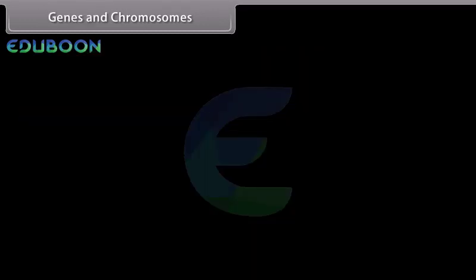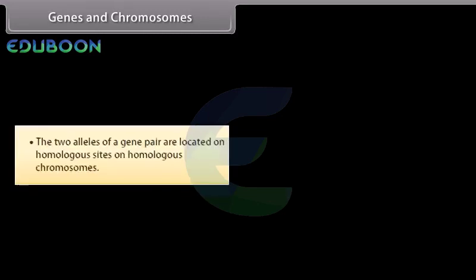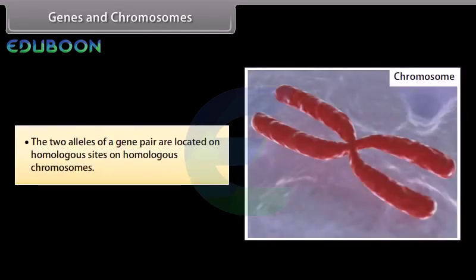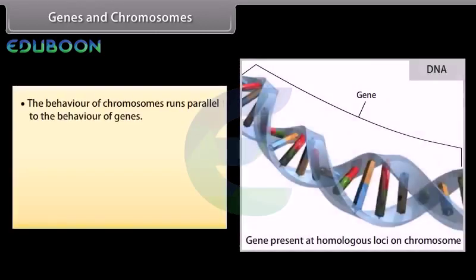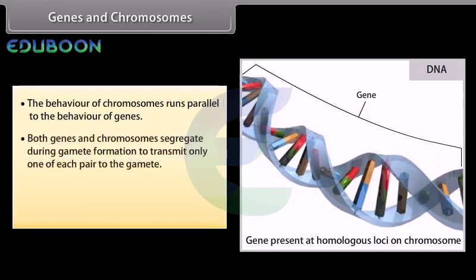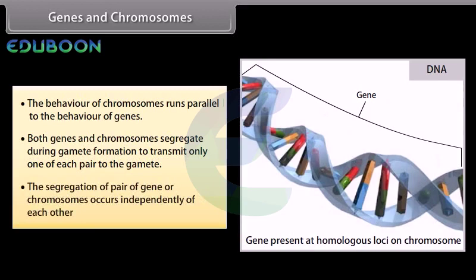The two alleles of a gene pair are located on homologous sites on homologous chromosomes. The behavior of chromosomes runs parallel to the behavior of genes. Both genes and chromosomes segregate during gamete formation to transmit only one of each pair to the gamete. The segregation of a pair of genes or chromosomes occurs independently of each other.